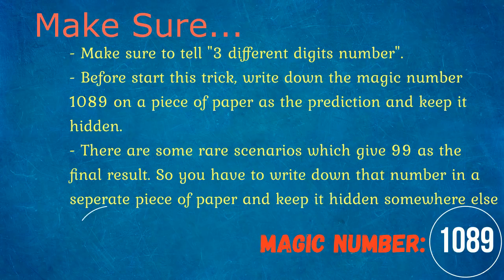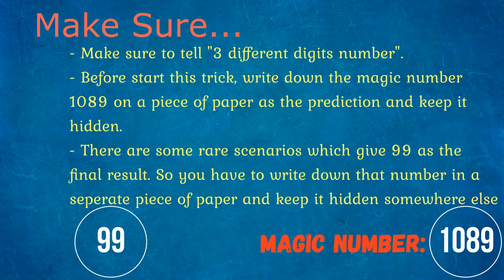But there are some rare scenarios which give you 99 as the final result. So you have to write down that number in a separate piece of paper and keep it hidden somewhere else. Your friends don't think you have a bunch of predictions all over the place. That says you will pick the number 99, just in case the final result turns out to be 99.